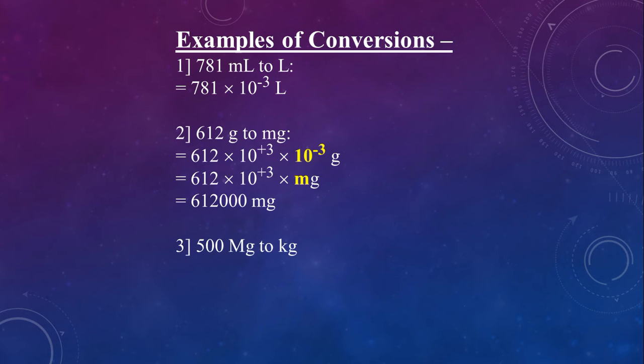Take another conversion like this: 500 mega gram to kilogram. First, you must recollect what was mega. Mega is 10 raised to 6. Now, we want kilo. Kilo is 10 raised to plus 3. From 10 raised to 6, we can extract 10 raised to 3 separately. So, we can say 10 raised to 6 is now split into 10 raised to 3 and 10 raised to 3. Out of that, the yellow part 10 raised to 3 is kilo. So, I can say 500 times 10 to the 3 kilogram. I hope the conversion things are clear to you.